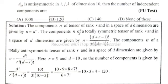The components n of a totally symmetric tensor of rank r and in a space of d dimensions are given by formula: n is equal to (d plus r minus 1) factorial divided by r factorial into (d minus 1) factorial.